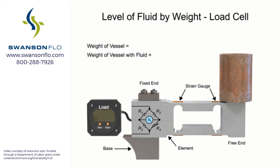As an example, to determine the level measurement of a column of water that is 2 feet tall with a diameter of 0.5 feet, the problem is solved by the following steps. The first step is measuring the weight of the vessel.